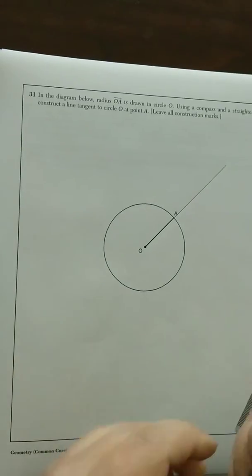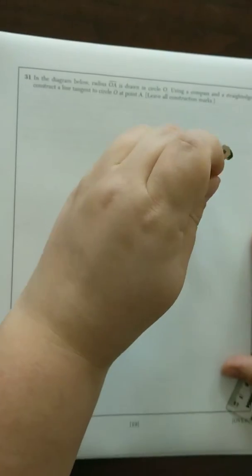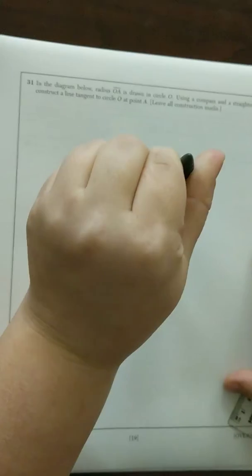From there, put your compass point on A and make an arc that fits on both sides of OA.